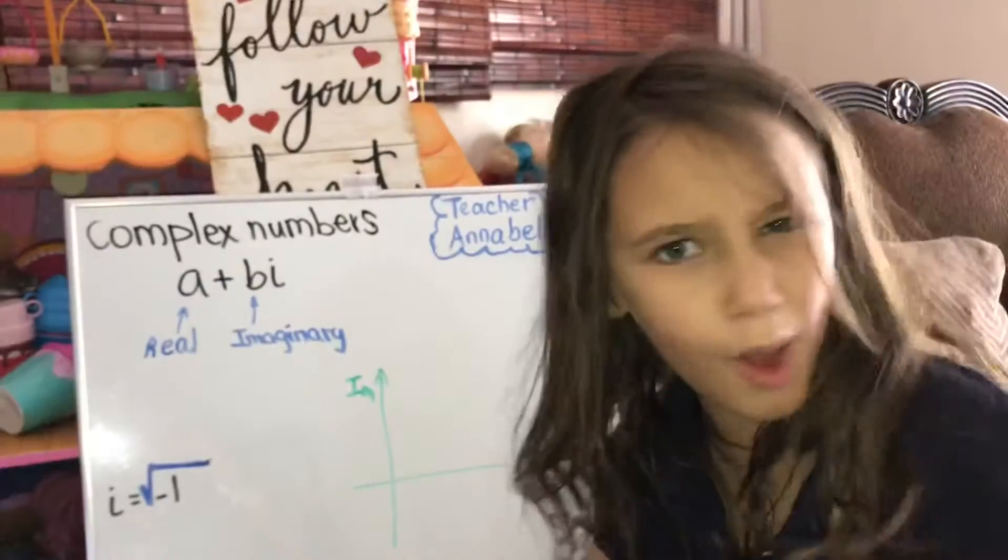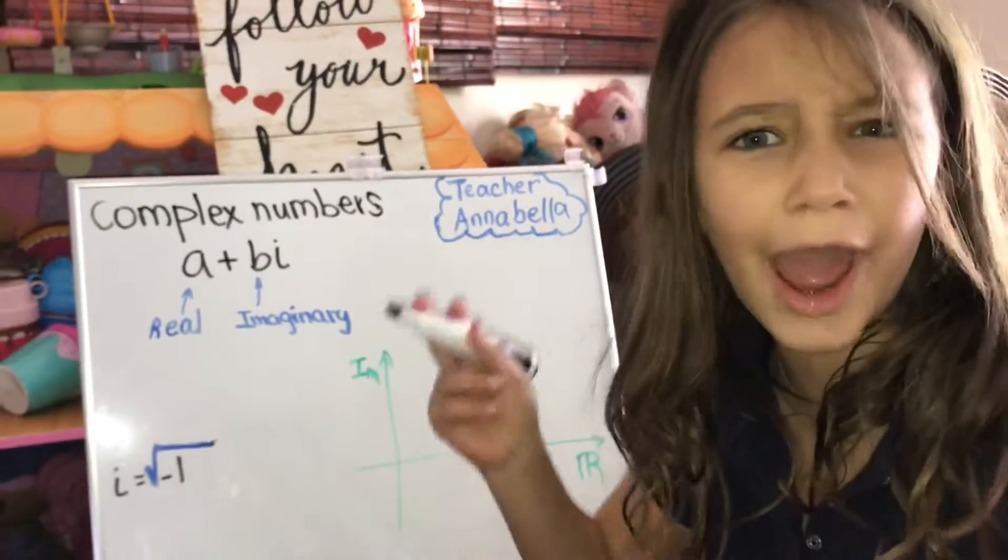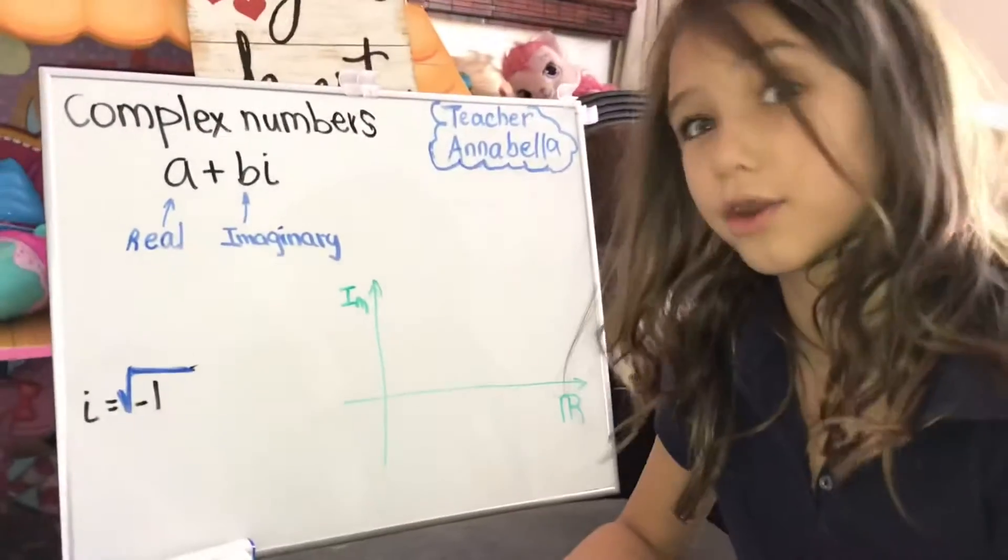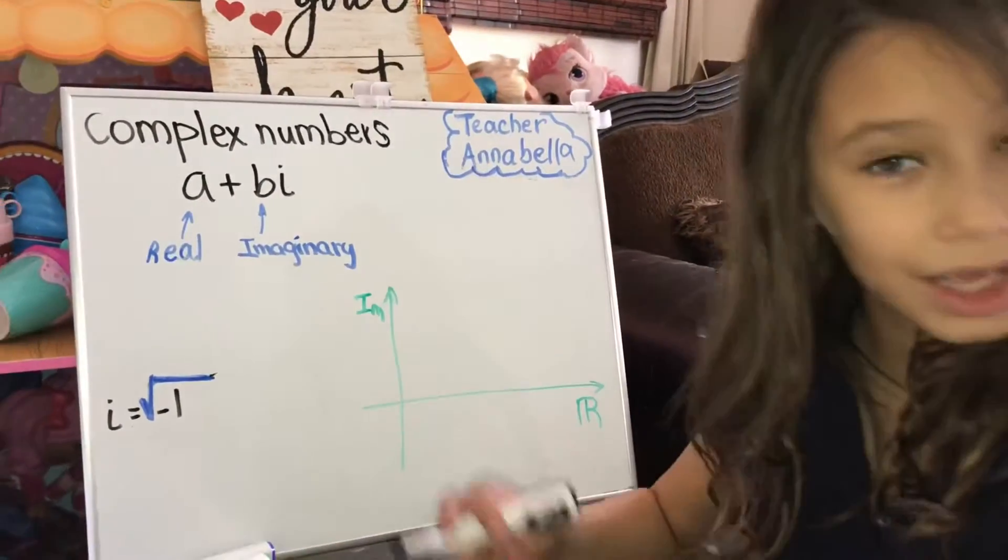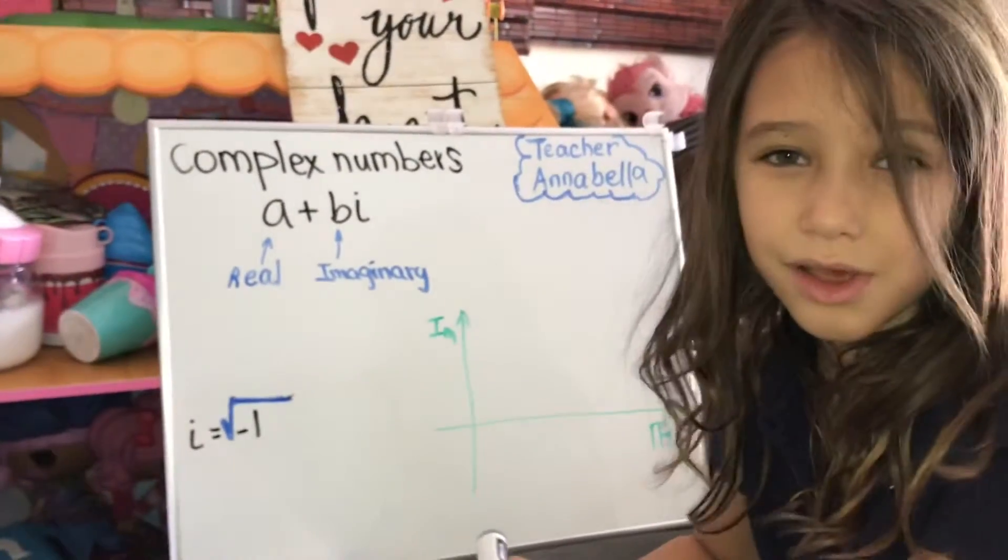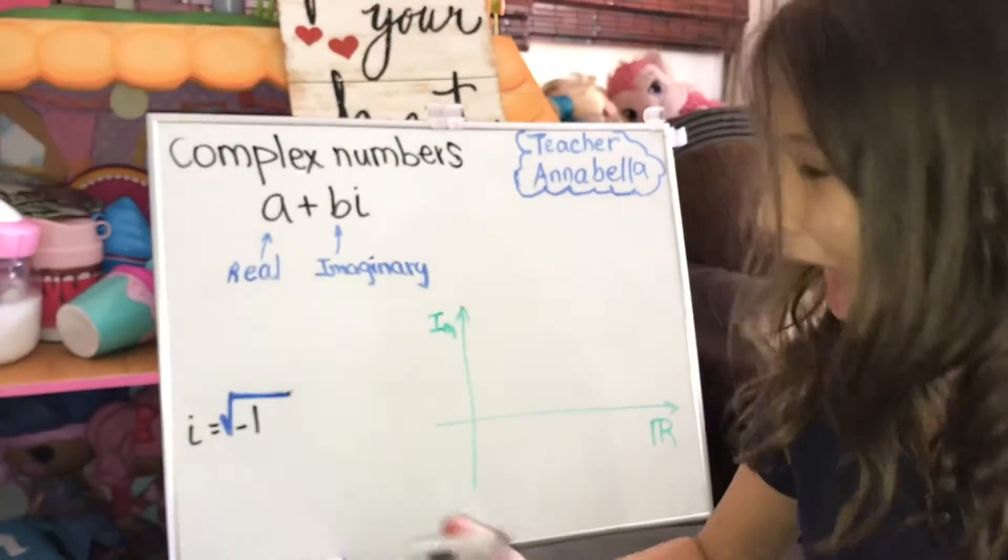But why did we come up with I? Well, mathematicians got kind of tired of not being able to do square root with negative numbers. So they came up with I.